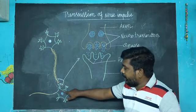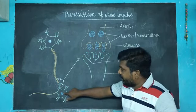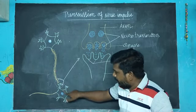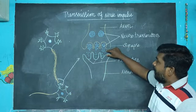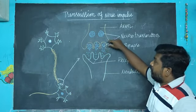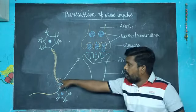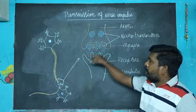Once the dendrites of this neuron receive the signal, the axon of another neuron meets together. The place where the axon of one neuron and dendrites of another neuron meet together...